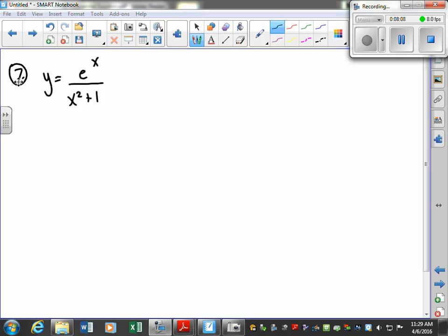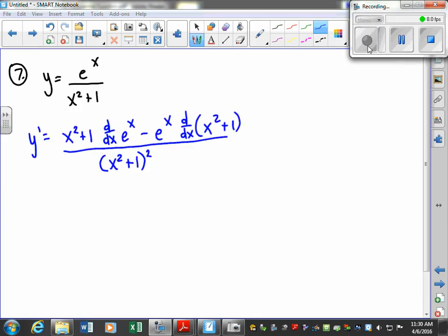Okay, and the next one is going to be e to the x divided by x squared plus 1. So we're going to use our quotient rule, which is low d high minus high d low over the square of what's below. So I'll give you a few minutes to write that down. Low derivative of high minus high derivative of low over the square of what's below.